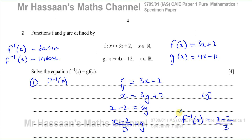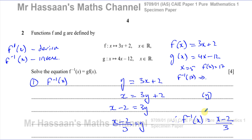Making y the subject: subtract 2 from both sides, then divide by 3. So I have x minus 2 over 3 equals y. Therefore, the inverse function is equal to x minus 2 over 3. We can verify this is correct because it undoes the function — for example, putting x equals 5 into f gives 3 times 5 plus 2, which is 17. Then putting 17 into the inverse gives 17 minus 2, which is 15, divided by 3, which gives back 5. It undoes the function.